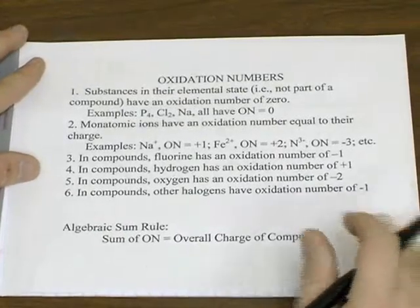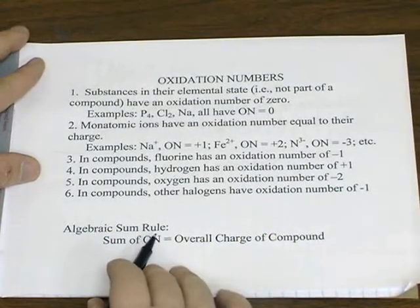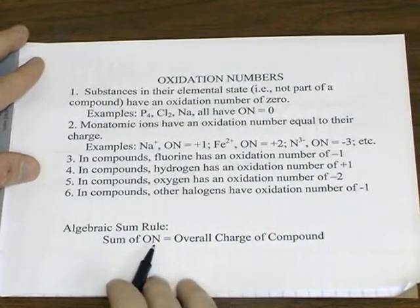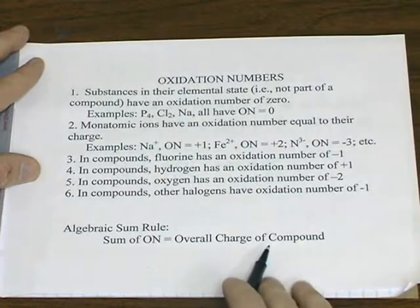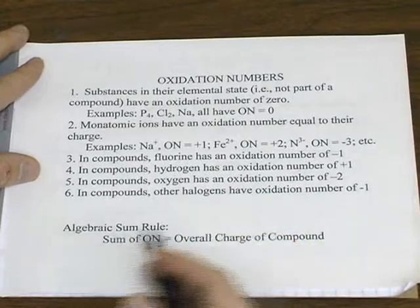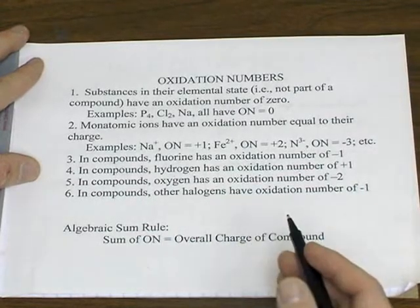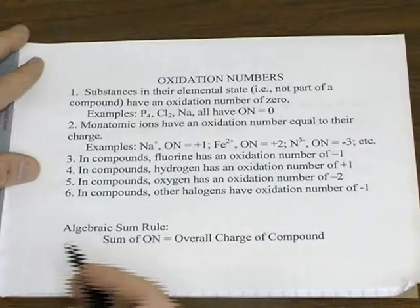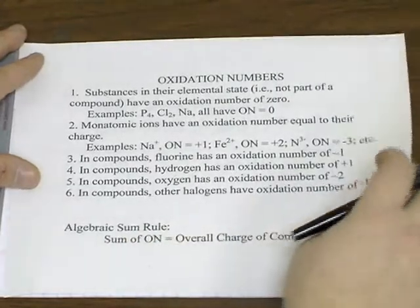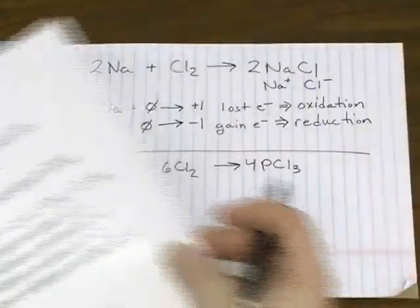Another rule we use is known as the algebraic sum rule, which says that the sum of the oxidation numbers has to equal the overall charge of the compound. So if it's a neutral compound, they add up to zero. If it's a polyatomic ion, the oxidation numbers have to add up to whatever that ion's charge is.